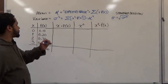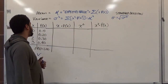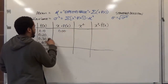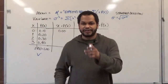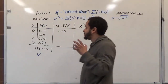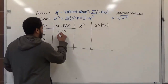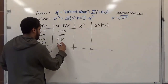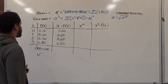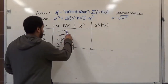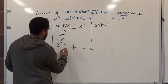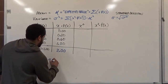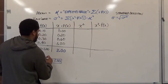To compute x times P(x), we multiply the x column by the P(x) column: 0 times 0.10 is 0.00; 1 times 0.20 is 0.20; 2 times 0.30 is 0.60; and 3 times 0.40 is 1.20. Taking the sum of this column gives us our expected value. Adding these up gives us 2.0, so our mean is 2.